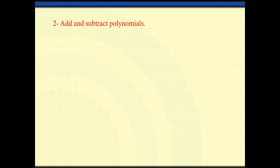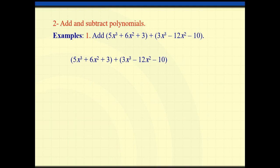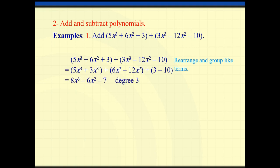This is the definition for the polynomial. Now, how do I add and subtract polynomials? You know it, but I'll pass quickly. If I want to add two polynomials, I need to add the same terms: 5x³ plus 3x³, 6x² minus 12x², and 3 minus 10. You need to group and add the same terms, and always write from the highest to the lowest degree. This polynomial has degree 3, and the leading coefficient is 8.